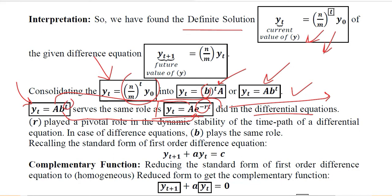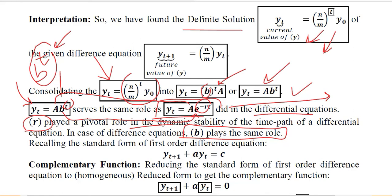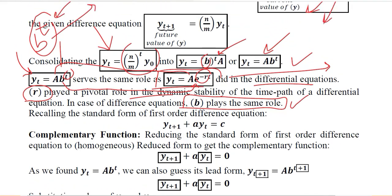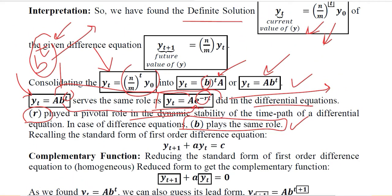There is relevance because both are time paths — one of the differential equation and the other of the difference equation. Acknowledging this, b can play a critical role here, just like r (the root) played a critical role in dynamic stability. Because we have b raised to the power t here, and t runs from 0 to infinity, b is the value that determines the fate of the dynamic stability of the time path.